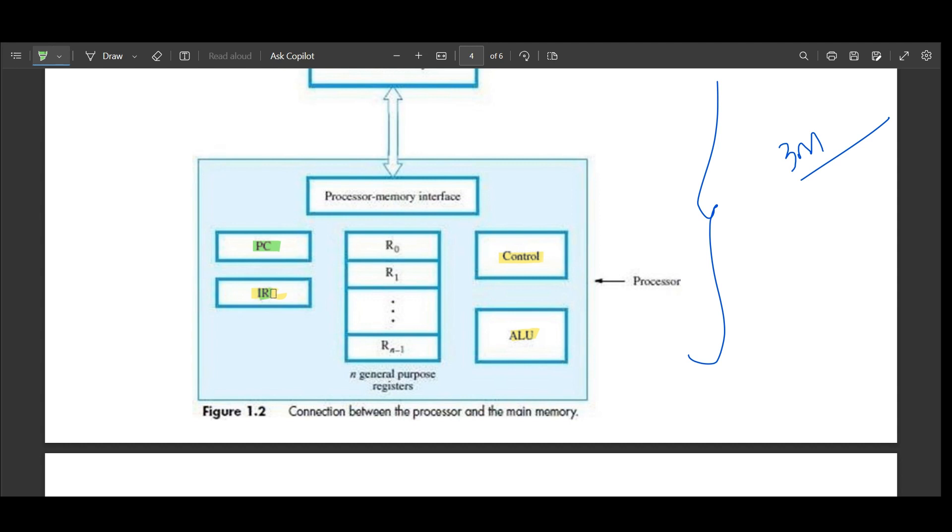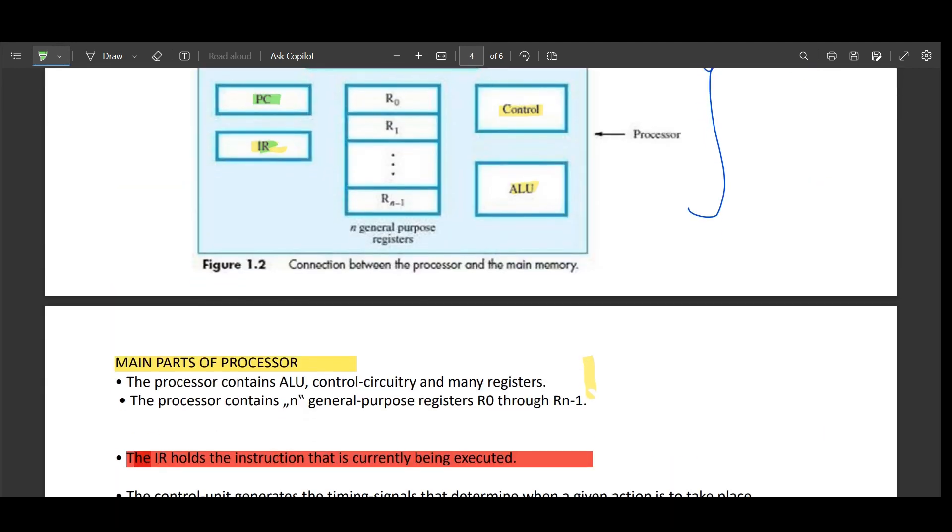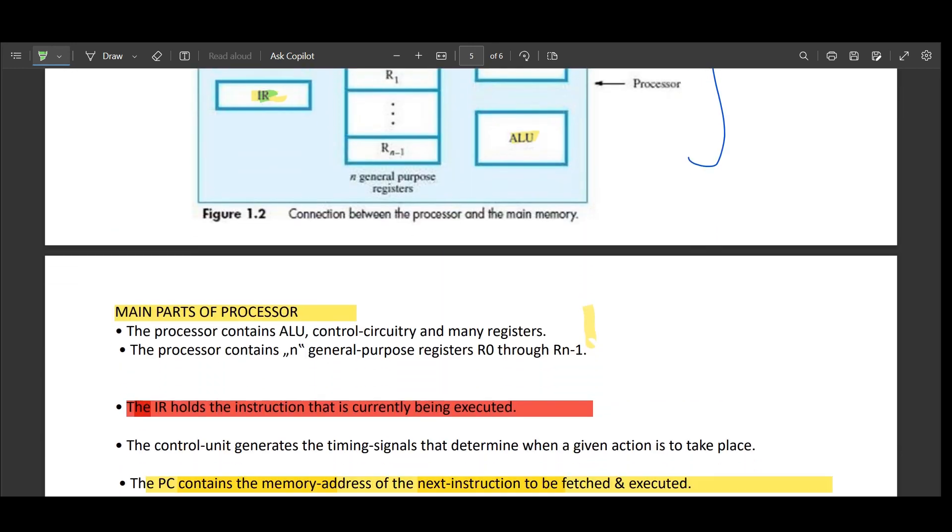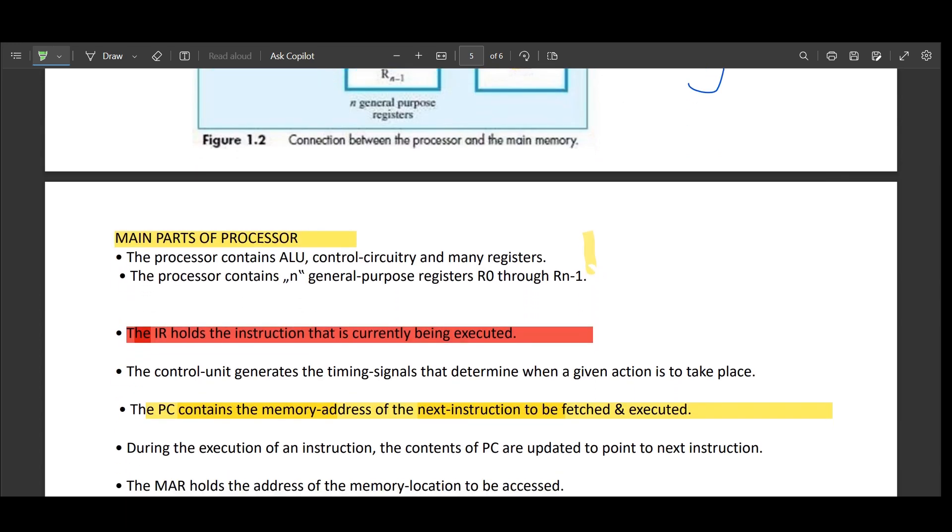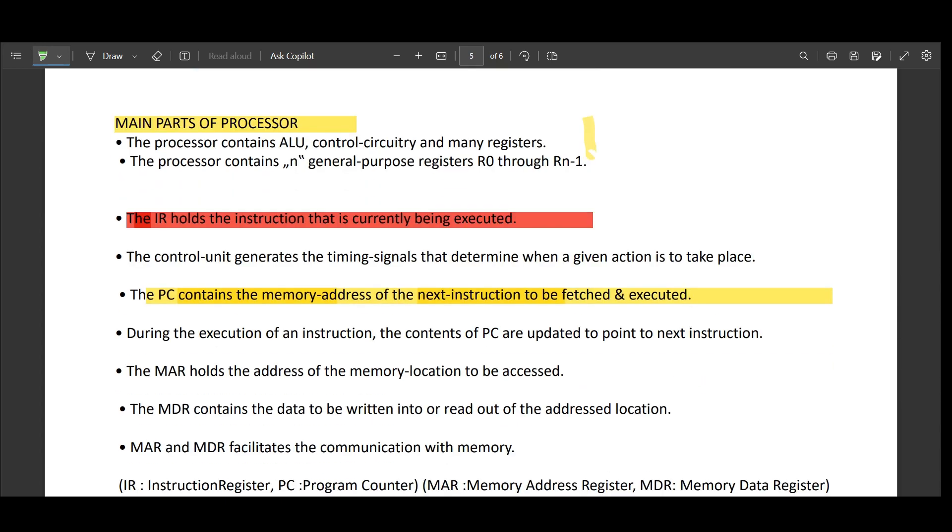But IR holds the instruction that needs to be executed currently, but PC is something that will hold the address. This is address and this is memory. This is address of the memory and this one is the instruction. It holds the instruction. We saw all these things. Next is control circuitry which will generate signal. Just remember generates a signal. If you write control circuitry generates the signal, that is timing signal, that determines when a given action is to take place.